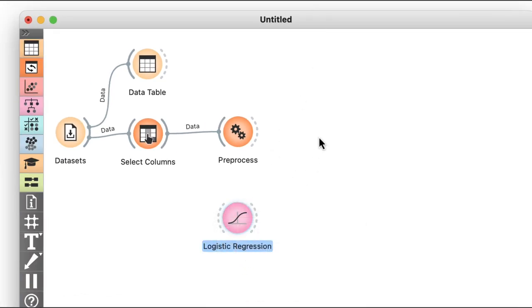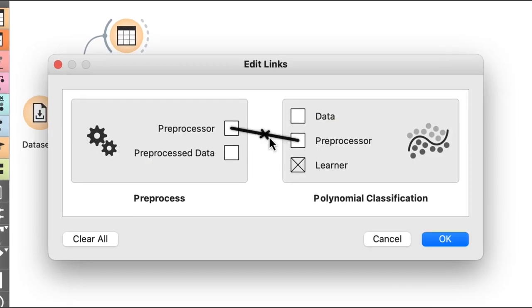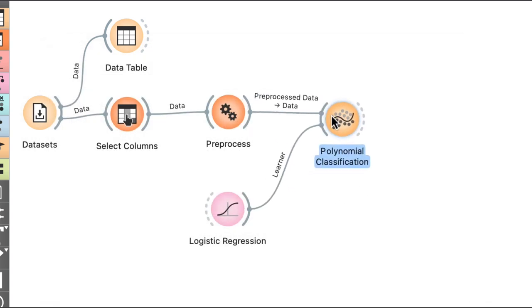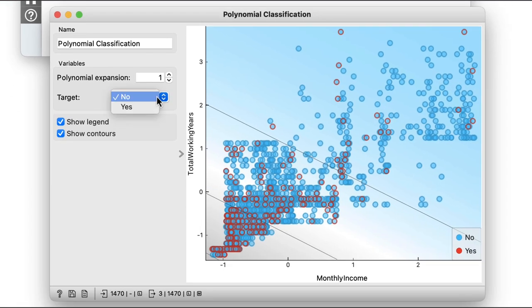Now let's see this data's decision boundary inferred by logistic regression. I'll again use the polynomial classification widget from the educational add-on, and set my target class to yes. Oops! There are many more blue points representing those who stayed, so the decision boundary with an attrition probability of 0.5 falls outside the picture.